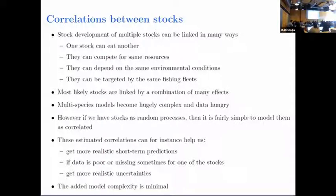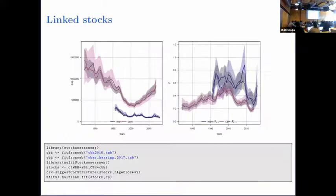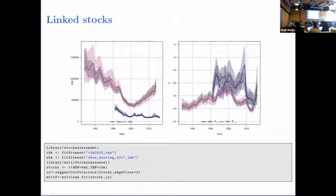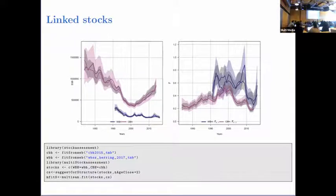Christopher from my group developed an R package called multi-stock assessment. You can take fits from the website — here he takes central Baltic herring and western Baltic spring-spawning herring, two neighboring stocks, and connects them. He sets up a vector of the two stock fits, specifies a correlation structure, and runs a multi-SAM fit. If the correlation is set to zero it's just two copies of the same assessment; you can expand the correlation to link the dynamics. The increments in the process are simply set up to be correlated.